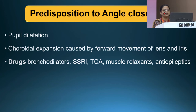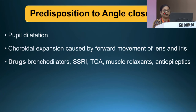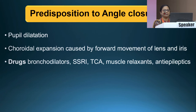Certain clinical conditions may predispose a patient to angle closure — for example, pupillary dilation at an outdoor examination may cause iris and choroidal effusion leading to angle closure. Certain drugs have also been found to cause choroidal effusion, including bronchodilators, SSRIs, TCAs, muscle relaxants, and antiepileptics.